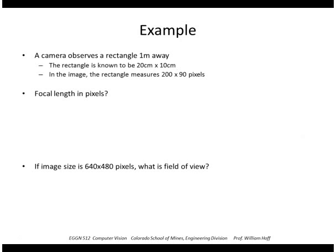So let's see how that would work in this example. So I have a camera looking at a rectangle. Let's say it looks straight on at the rectangle. The rectangle is 20 centimeters by 10 centimeters. In the image the rectangle is 200 by 90 pixels. So what is the focal length in pixels? Let's draw a little picture here. Okay, so our rectangle is somewhere in the image, and it's 200 pixels wide. And I know that really corresponds to 20 centimeters.